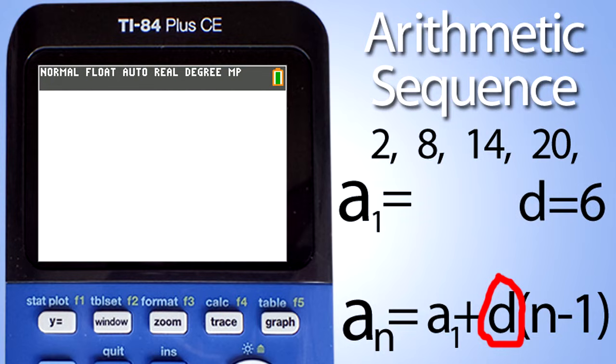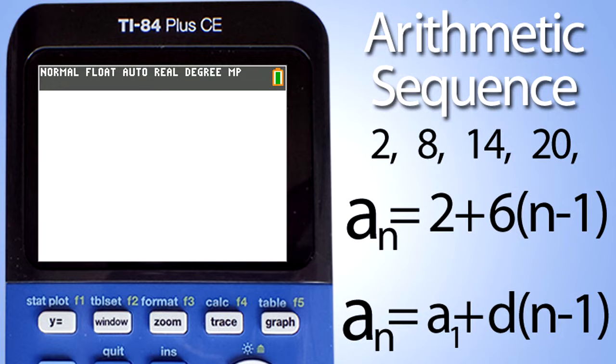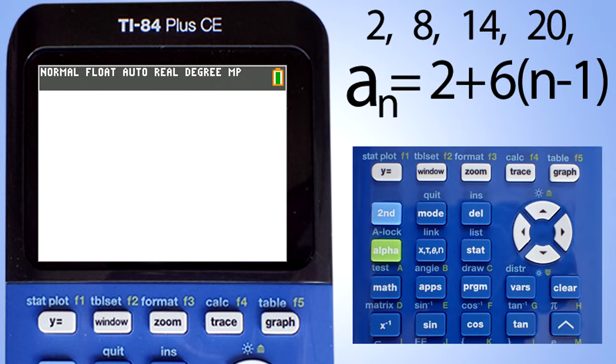A sub 1 is the first number of the sequence, in this case 2. Thus, our formula now looks like this: a sub n equals 2 plus 6 times n minus 1. Now we have everything we need to use the TI-84 plus CE graphing calculator to find what is the 20th term for this arithmetic sequence, or any term that we want.